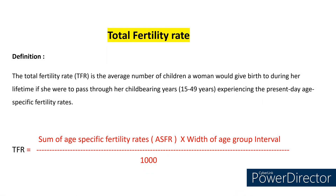Total Fertility Rate. It is the average number of children a woman would give birth to during her lifetime if she were to pass through her childbearing years — that is 15 to 49 — experiencing the present-day age-specific fertility rates. So basically, it is the average number of children a woman would give birth to during her childbearing years. If you know the age-specific fertility rates, the TFR formula becomes: sum of age-specific fertility rates multiplied by width of age group interval, divided by 1000.